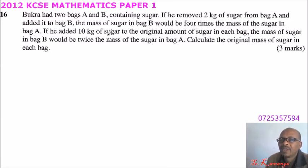If we add 10 kg of sugar to the original amount of sugar in each bag, the mass of the sugar in B would be twice the mass of the sugar in A. Calculate the original mass of the sugar in each bag.